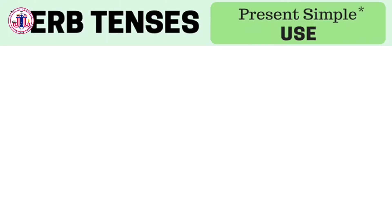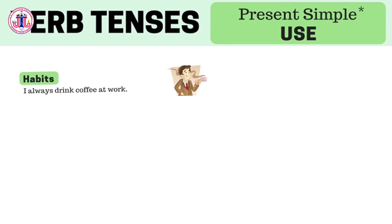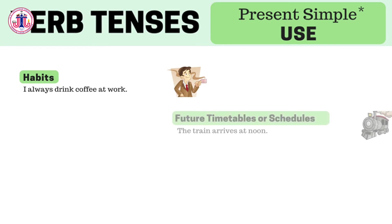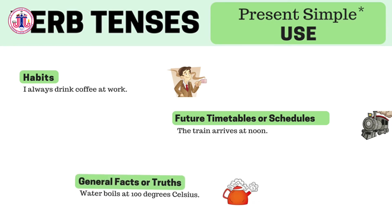Now, when do we use the present simple tense? When talking about habits — for example, I always drink coffee. When talking about future timetables or schedules — for example, the train arrives at noon. Or for general facts or truths — for example, water boils at 100 degrees Celsius.